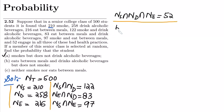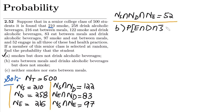Part B: we have to find the probability that the student eats between meals and drinks alcoholic beverages but does not smoke. 'Eats between meals and drinks' is represented by the intersection symbol, and 'does not smoke' is represented by the complement. So we need to find P(E ∩ D ∩ S').